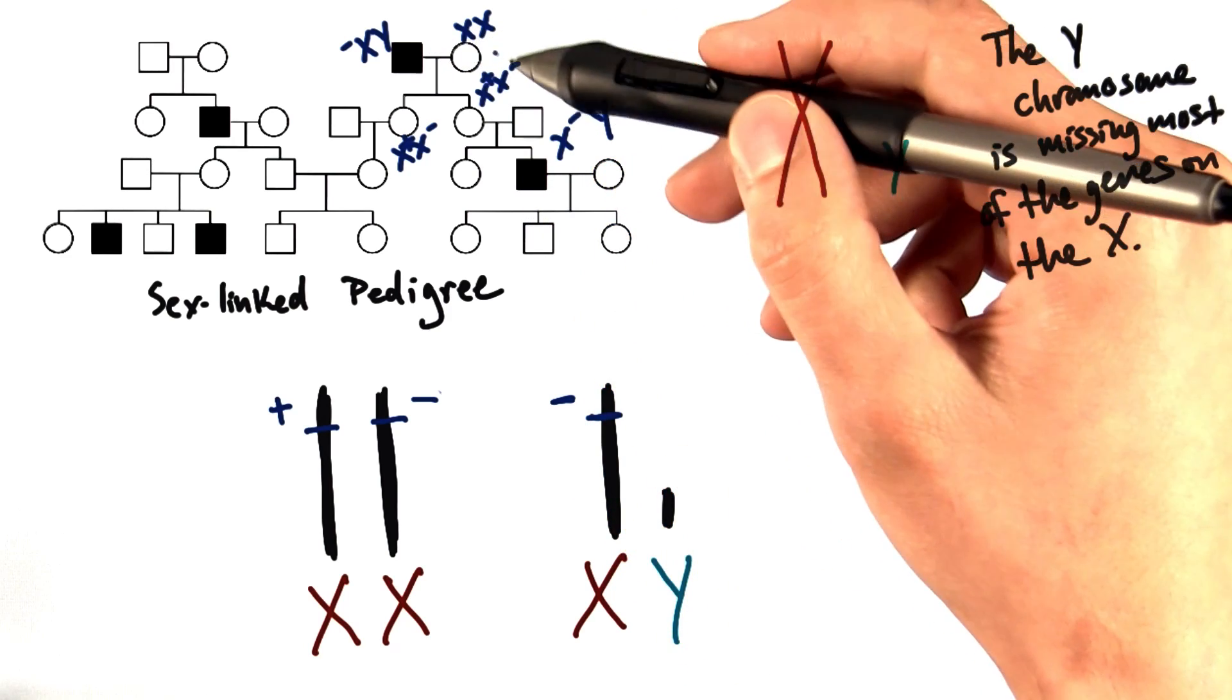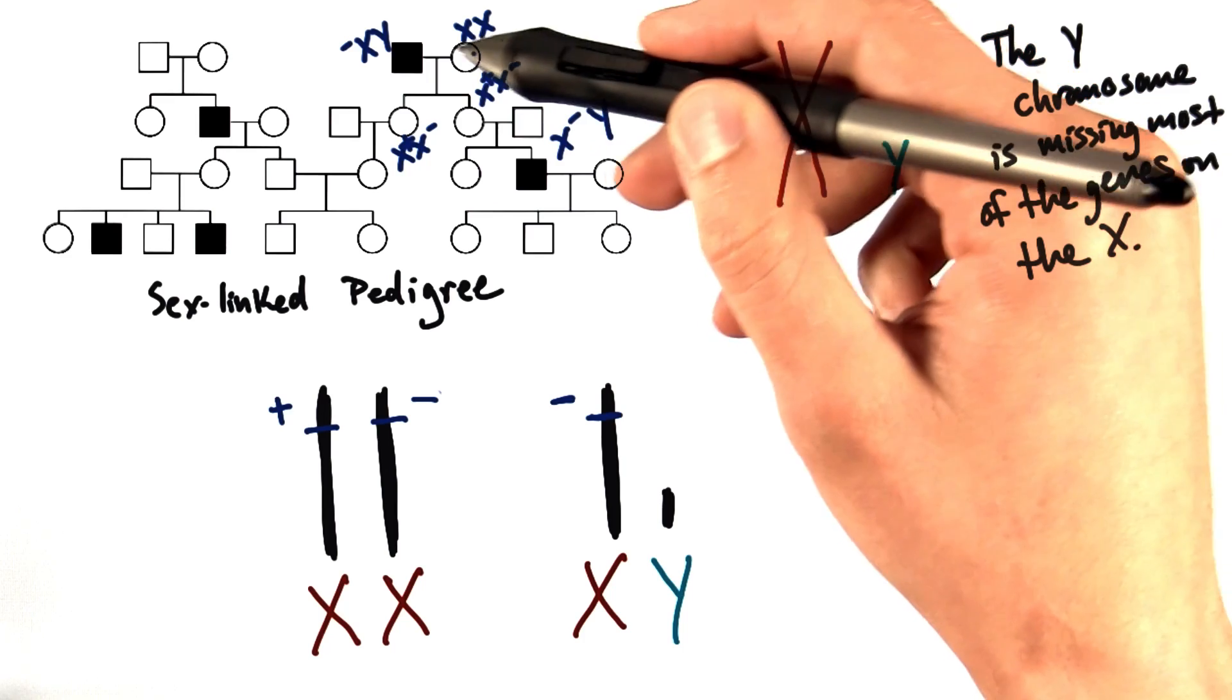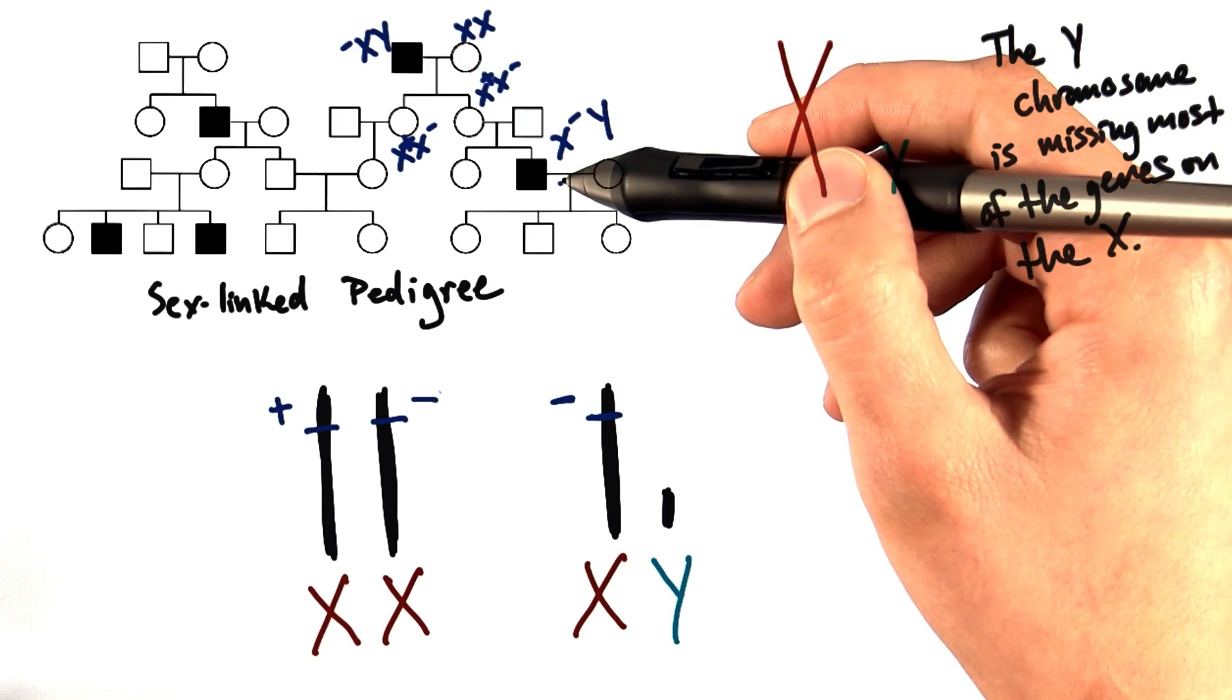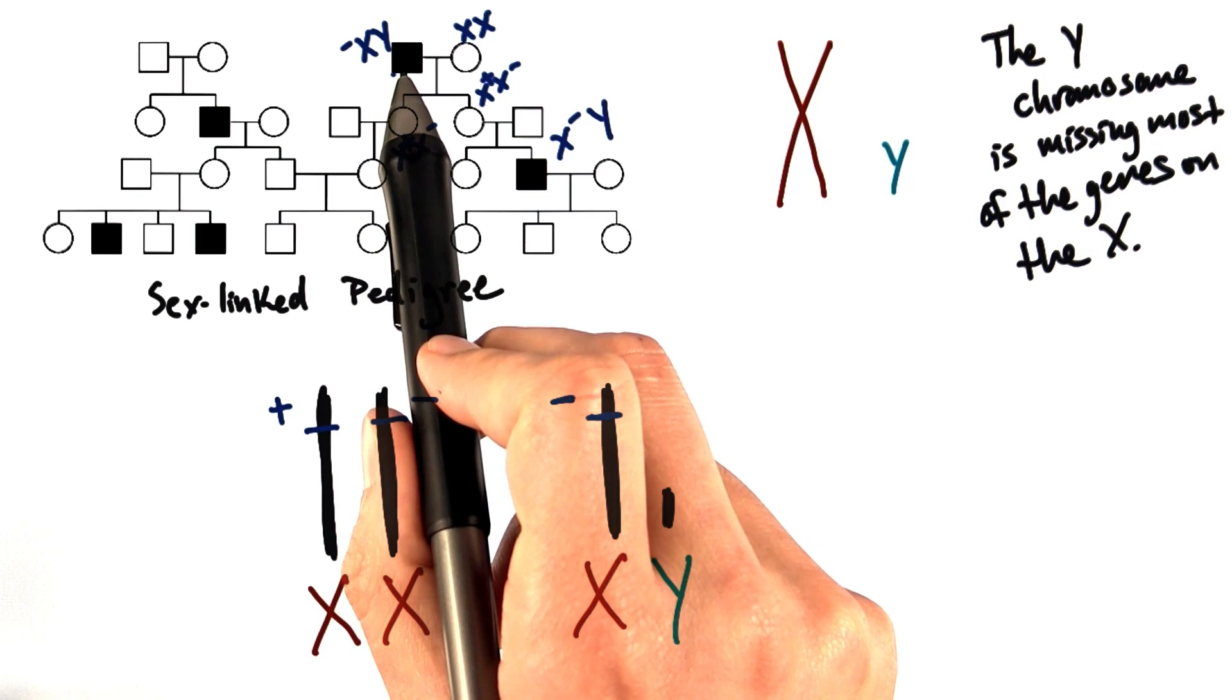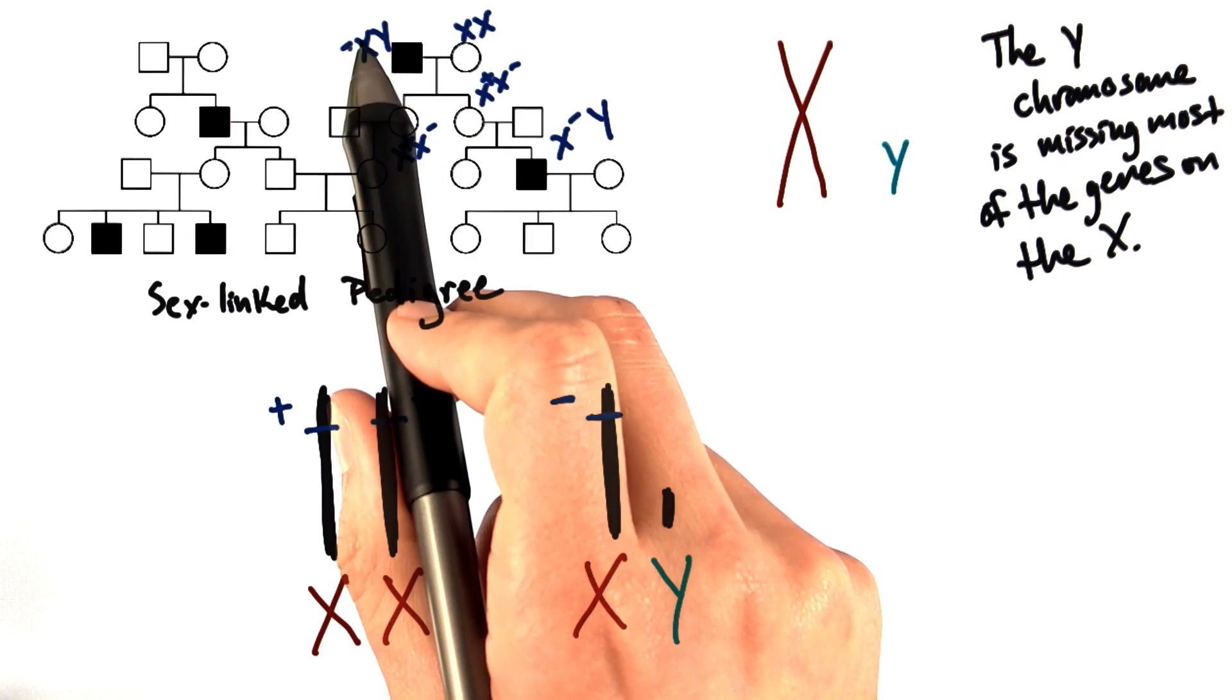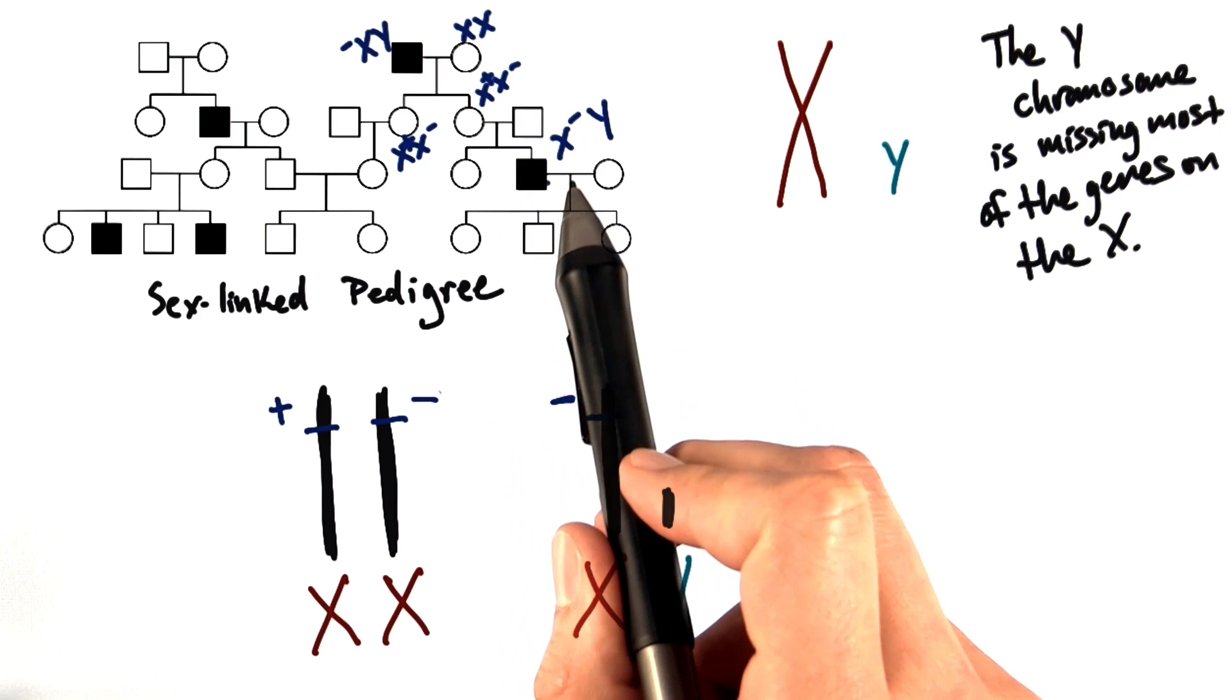So although the trait looks like it skipped a generation, right? It looks like it went from grandfather to grandson. The allele didn't skip anybody. The allele went right from grandfather to mother to son. You can see it. You can track it in the pedigree.